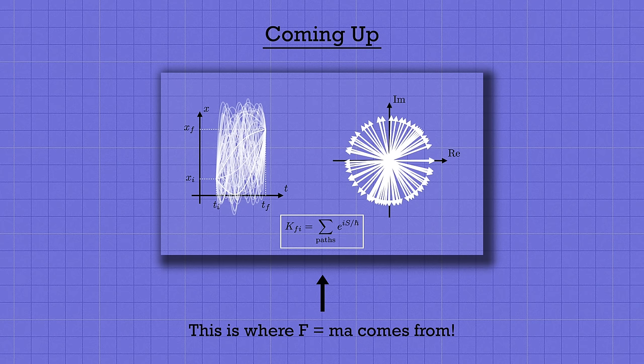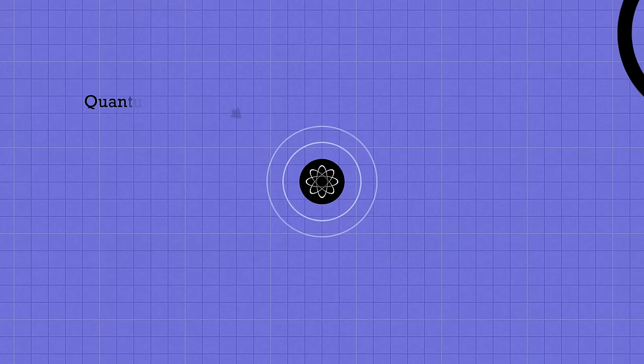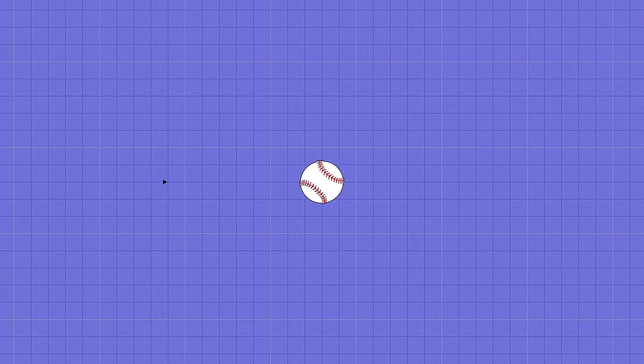Quantum mechanics is all about describing the behavior of really tiny particles, like electrons. And to give you an idea of just how different it is from classical physics, let's start by comparing and contrasting the classical and quantum versions of a very simple problem.